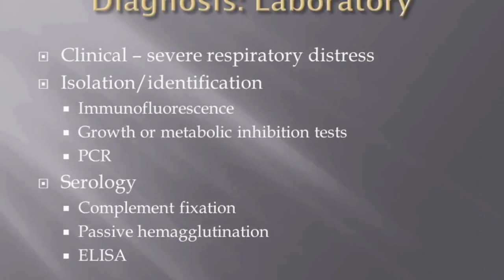Contagious Caprine Pleuropneumonia should be suspected when severe respiratory disease with high morbidity and high mortality is seen in goats. Definitive diagnosis is made by isolation and identification of the organism. Immunofluorescence, growth or metabolic inhibition tests, and polymerase chain reaction can also be used for identification. Serological tests include complement fixation, latex agglutination, indirect hemagglutination, and enzyme-linked immunosorbent assay. Serological tests are generally used on a herd basis and not for individual diagnosis. These tests do not identify all reactors, and cross-reactions occur with other species in the Mycoplasma mycoides cluster.